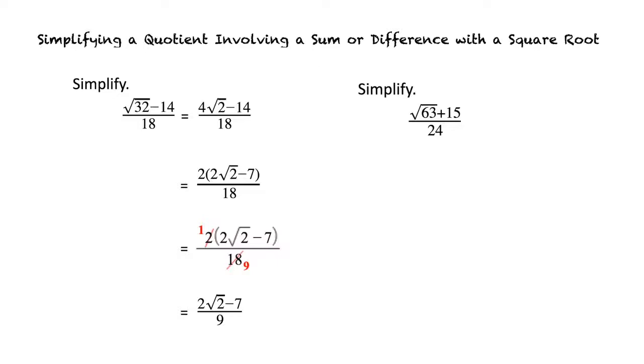We begin by factoring out 9 from 63, giving us 3 square root of 7 plus 15 over 24.